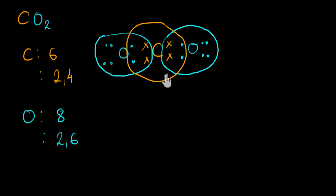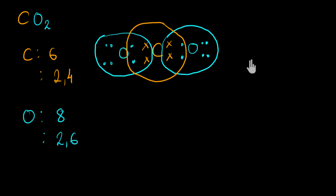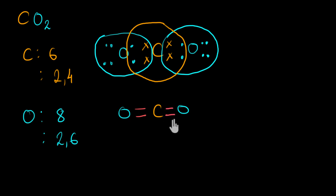To represent this in simple notation, we replace each pair of shared electrons with a single dash. Since two pairs are shared between carbon and each oxygen, that gives us two dashes — a double bond. So the structure is: O = C = O. Carbon and each oxygen have a double covalent bond between them. This is how carbon dioxide differs from water — carbon dioxide has double covalent bonds.